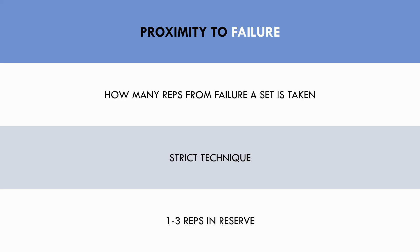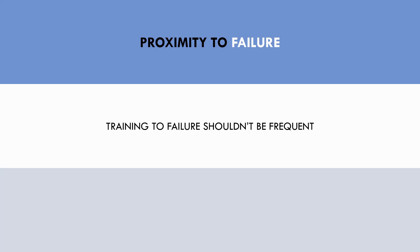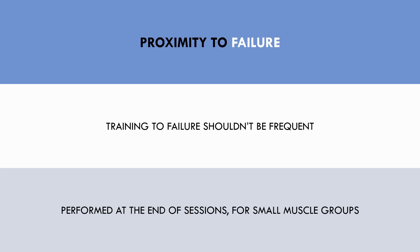For more information on motor unit recruitment for hypertrophy training, you can watch the video on this channel titled 'How close to failure should you train for hypertrophy?' When we use a lower rep range of around 6-10, sets can be taken around 2-3 reps from failure, and when using higher rep ranges of 15-20, then sets should be taken around 1-2 reps from failure. Training to complete failure, or zero reps in reserve, can be performed sometimes, but it shouldn't be performed very frequently. This is because it causes excessive central and local fatigue and can impact performance for following sets and training sessions. Training to failure should only be performed at the end of sessions and in small muscle groups like the biceps or calves.